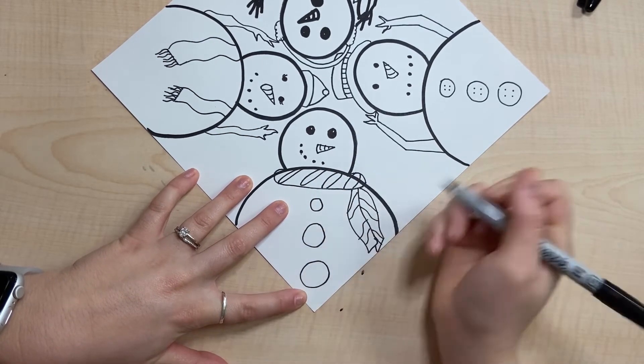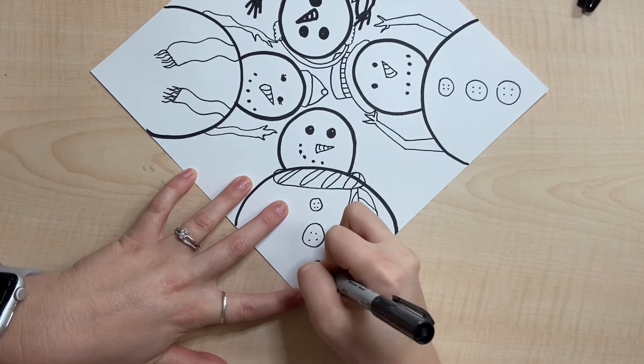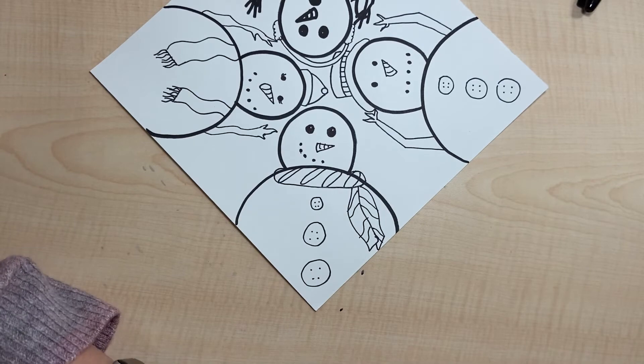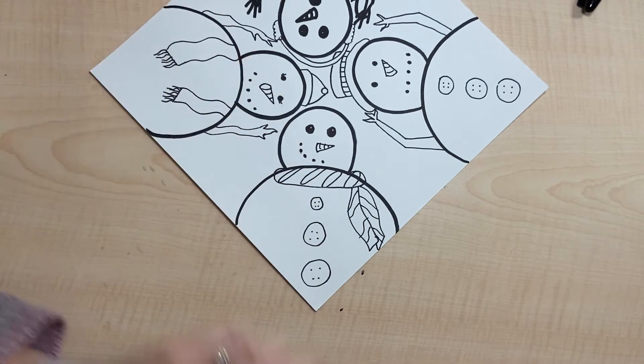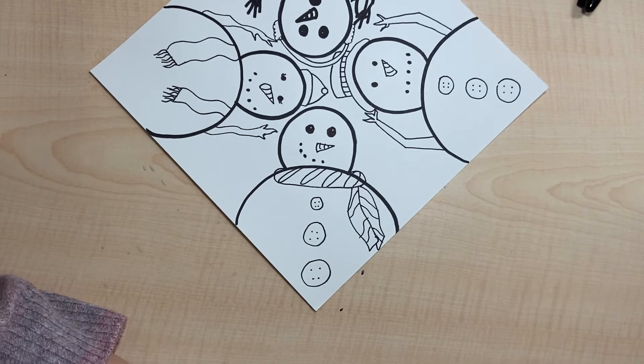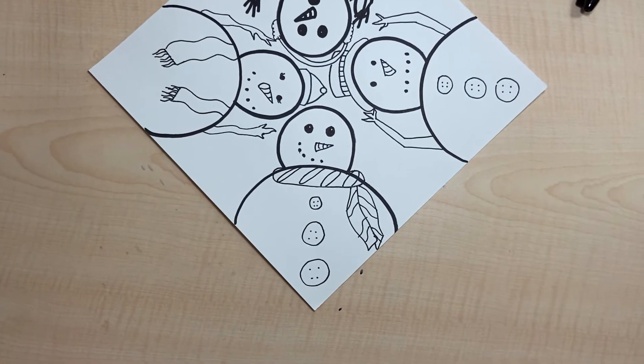He's also gonna have buttons, one, two, and three. His arms are going to be down so we won't see his arms. Here is the trick that makes this look 3D.